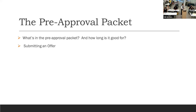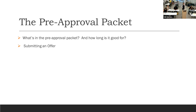How long is the pre-approval good for? Technically 60 days, but we don't pull a new credit report every 30 days when they're shopping for a home — that would hurt the score. We pull one and make it last as long as needed. Once you have the pre-approval packet, you'll submit it with your offer. Now let's talk about contingency dates.